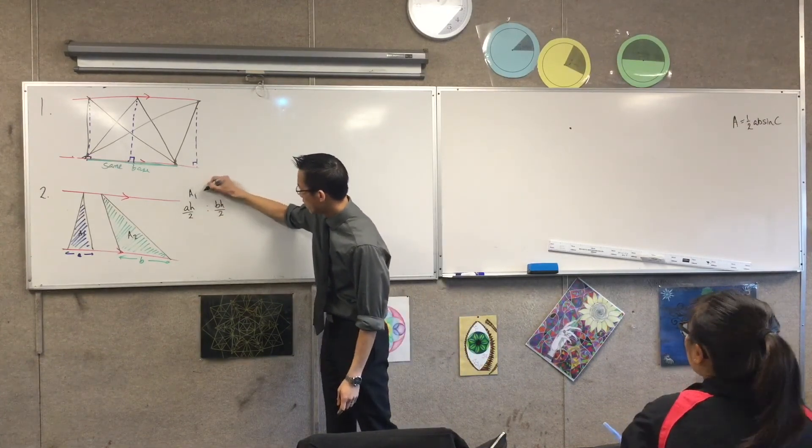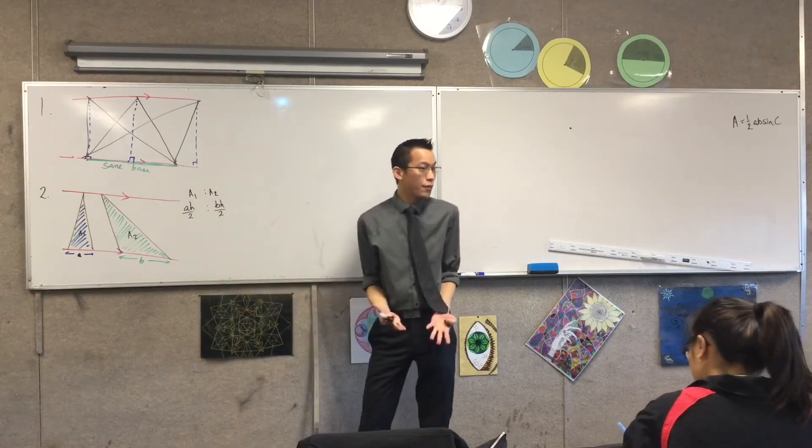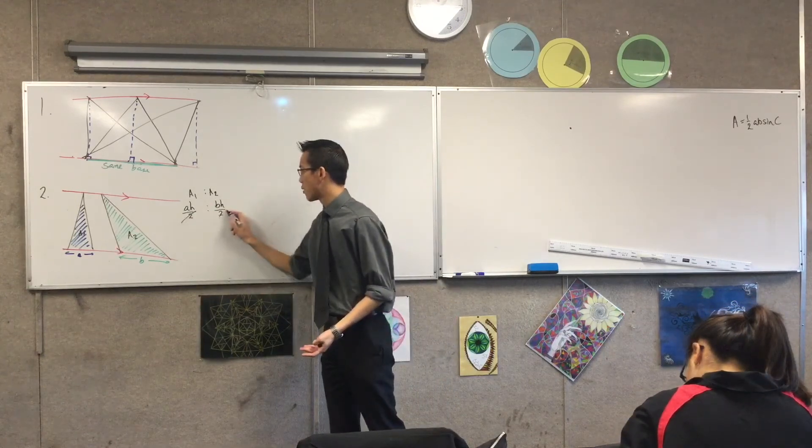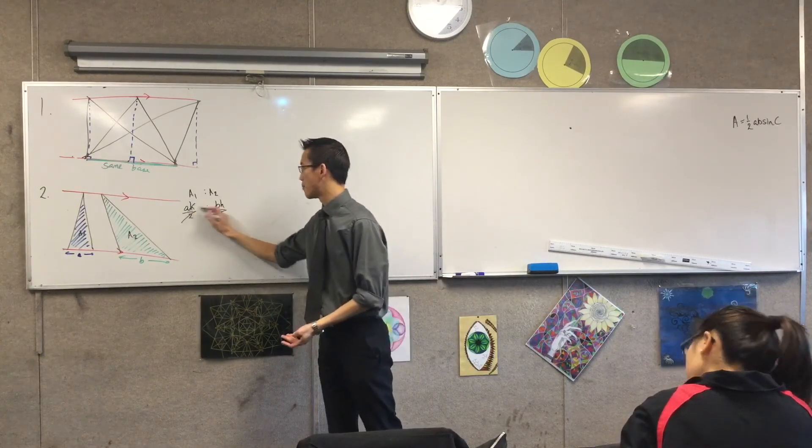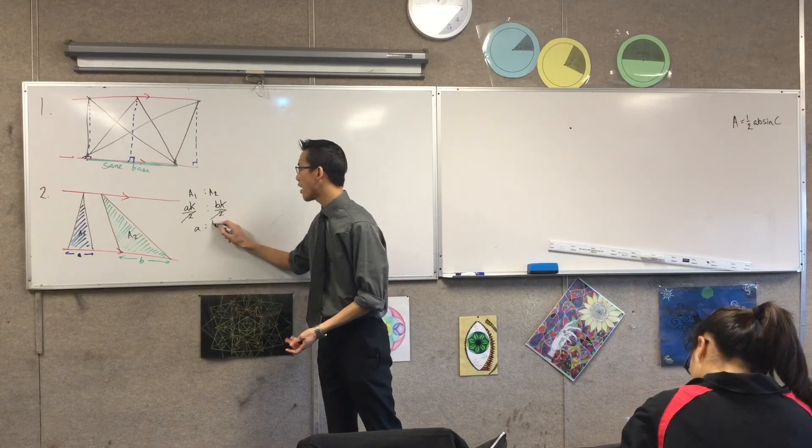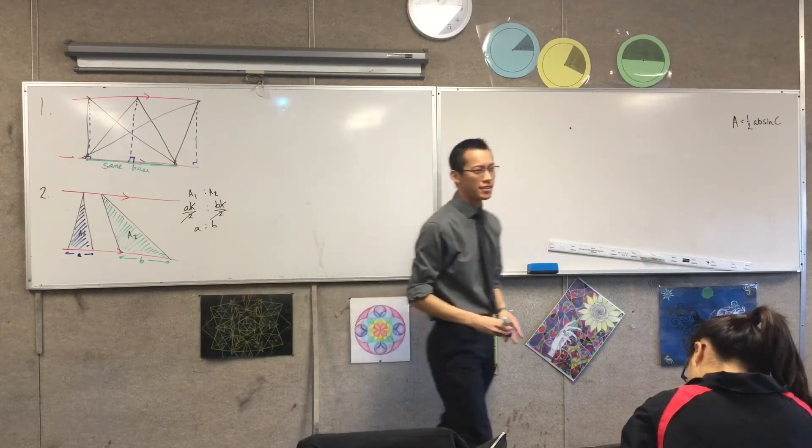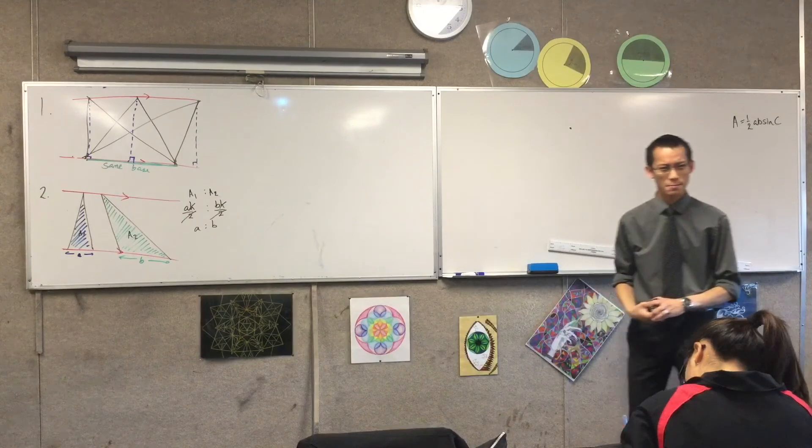this area 1 to area 2, I can simplify it. I could multiply both of them by 2, I could divide both of them by H, and I find that the areas are in the same proportion as the bases. Does that make sense?